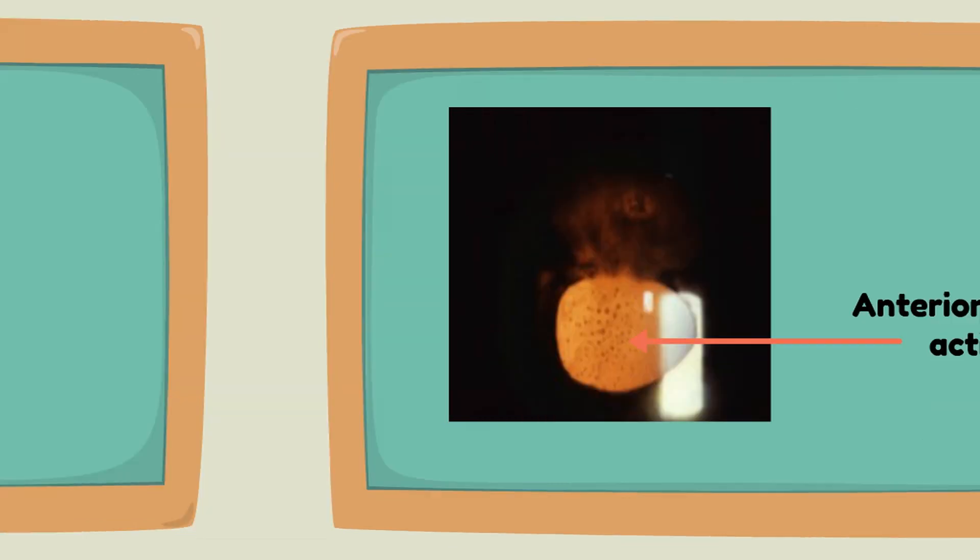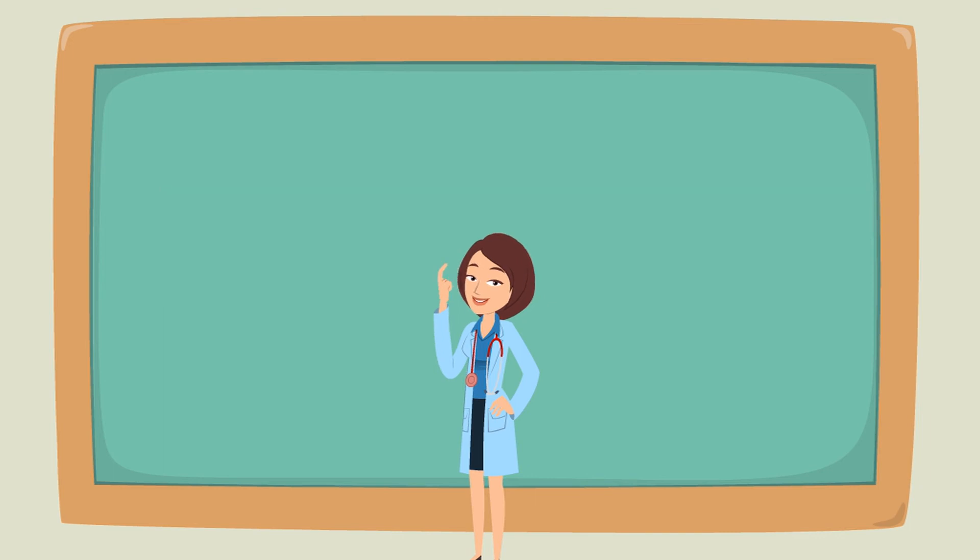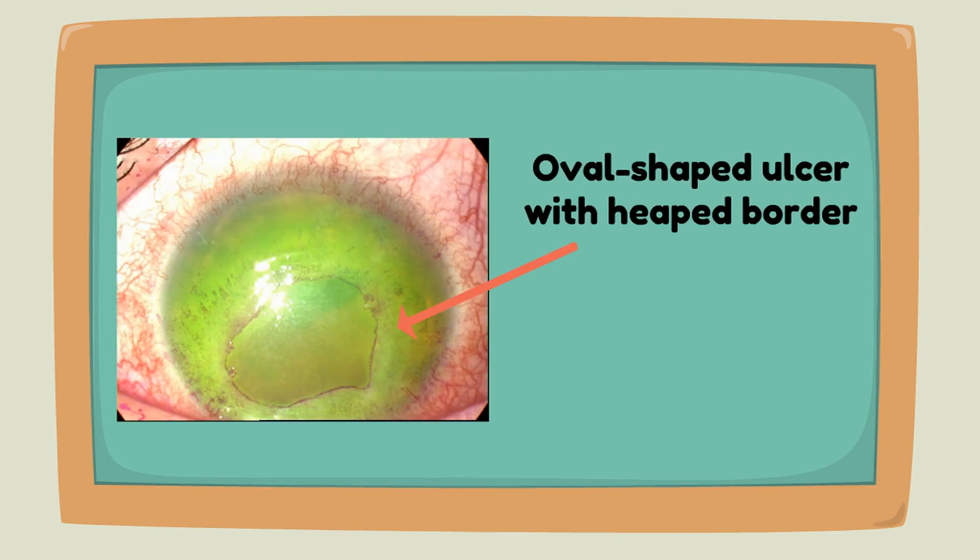Don't forget about neurotropic keratitis, which can occur following recurrent episodes. It ranges in severity from irregular epithelial surface to an oval-shaped ulcer with a heaped-up epithelial border.